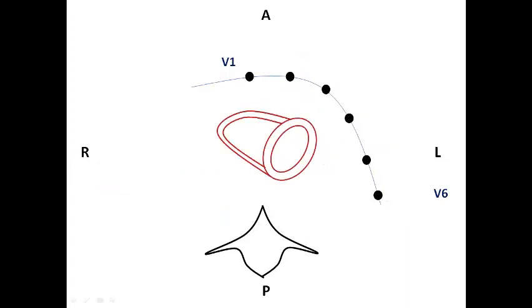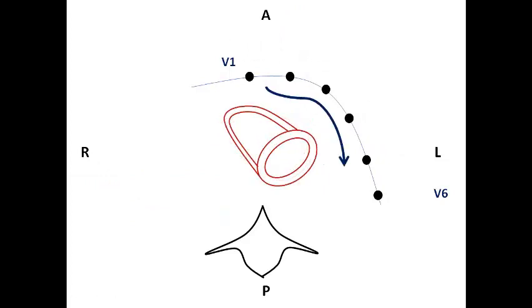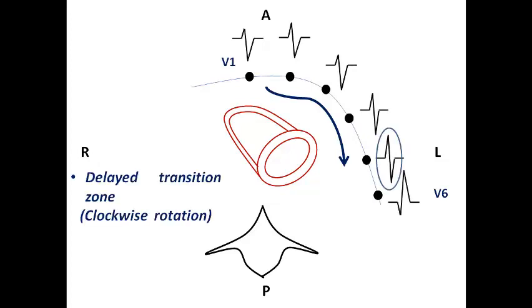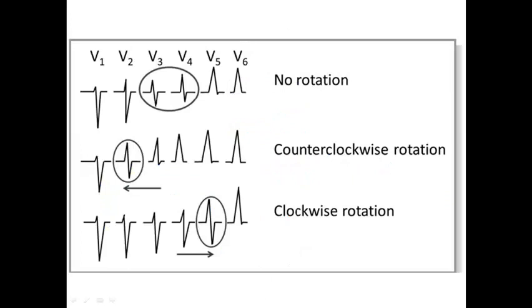Conversely, some patients have a heart rotated to the left, sometimes due to hypertension or LV dilatation. In these cases the transition zone is delayed till V5, which we call delayed transition zone or poor R-wave progression — and we call it clockwise rotation based on the direction of cardiac rotation. So counterclockwise rotation refers to early transition zone, and clockwise rotation refers to delayed transition zone.